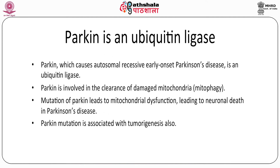Parkin, which causes autosomal recessive early-onset Parkinson's disease, is an ubiquitin ligase. Parkin is involved in the clearance of damaged mitochondria by mitophagy. Mutation of Parkin leads to mitochondrial dysfunction because damaged mitochondria are not removed, causing neuronal death in Parkinson's disease. Parkin mutation is also associated with tumorigenesis, as mitochondria are very important for the intact nature of the cell.